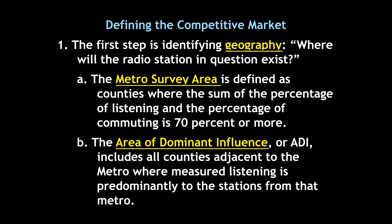The first step in identifying your competitive market is going to be looking at geography — where will the radio station exist? There are several different things to take a look at, and many of these terms are going to be reviews from chapter five. First off, the metro survey area. This is defined as counties where the sum of the percentage of listening and the percentage of commuting is 70% or more. So this is where the bulk of your listeners is going to be. In the Raleigh-Durham radio market, the metro survey area is basically Wake County and perhaps Durham and Orange counties, because that's where most of the people live and commute.